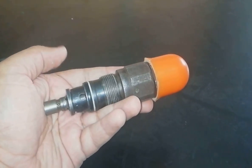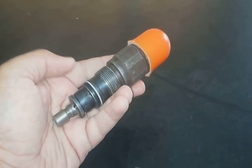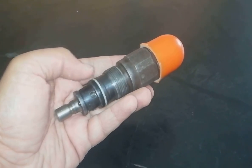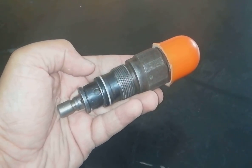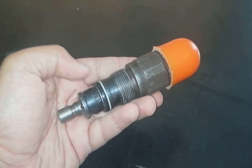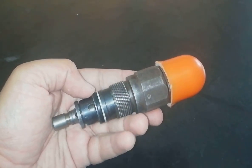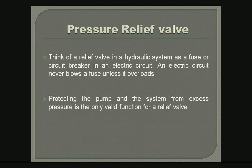Today we will discuss the most common component used in a hydraulic system: the pressure relief valve. Pressure relief valves are direct operated and also available in pilot operated systems. Think of a relief valve in a hydraulic system as a fuse or a circuit breaker in an electric circuit.